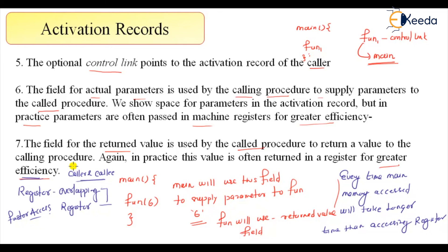So we are done with the activation record and its fields. There are a total of seven different fields, and I have explained each one. Note that there are certain responsibilities of the calling procedure and certain responsibilities of the callee procedure — caller and callee each have their own roles. I hope this is clear. Thank you.